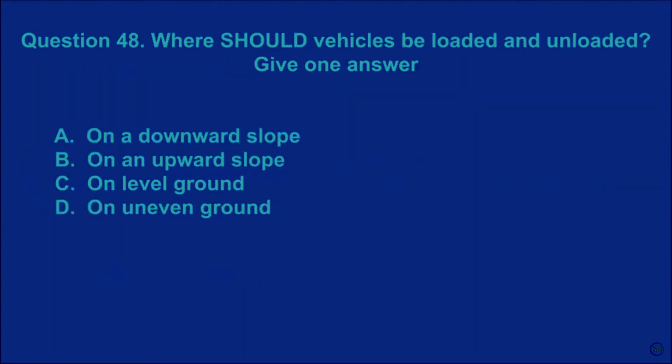Question 48: Where should vehicles be loaded and unloaded? Give one answer. A: on a downward slope. B: on an upward slope. C: on level ground. D: on uneven ground. The correct answer is C.